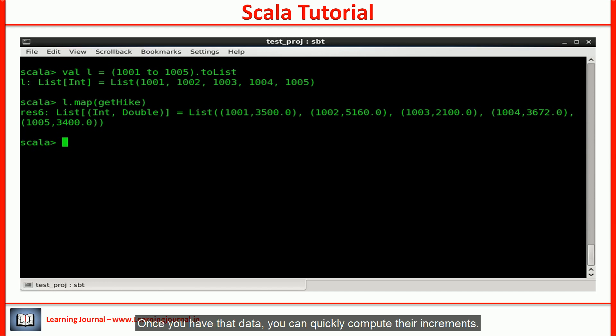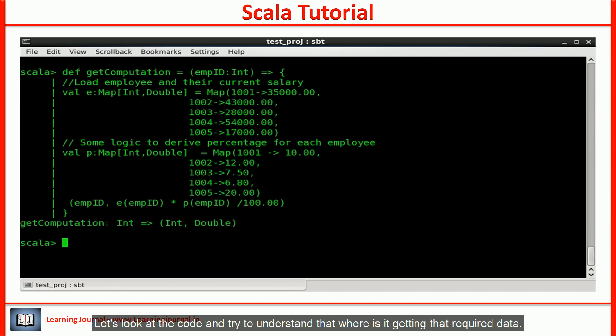Once you have that data, you can quickly compute their increments. Let's look at the code and try to understand where it's getting that required data. Looks a little complicated to grasp because we haven't learned Scala language yet. But I want you to focus on the last line. The last line is an anonymous function body.